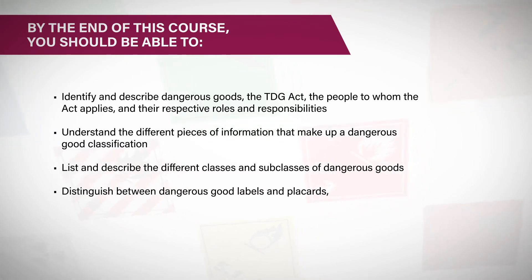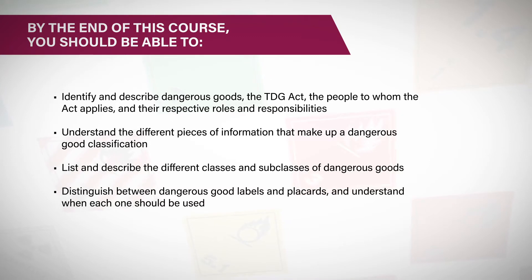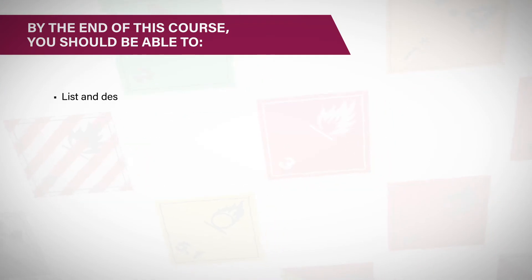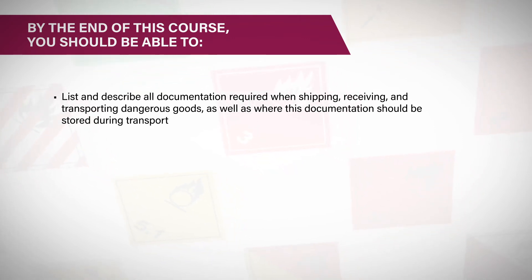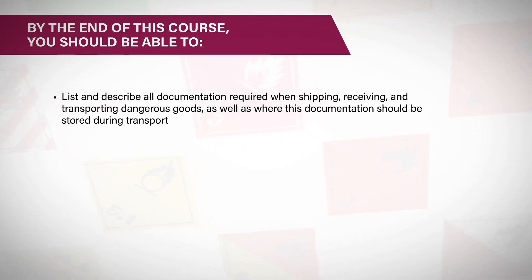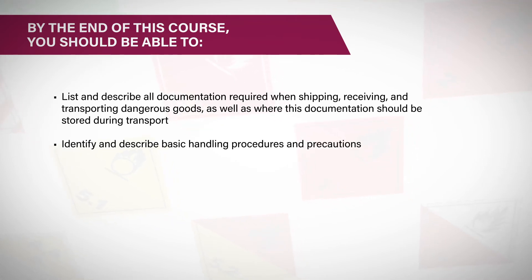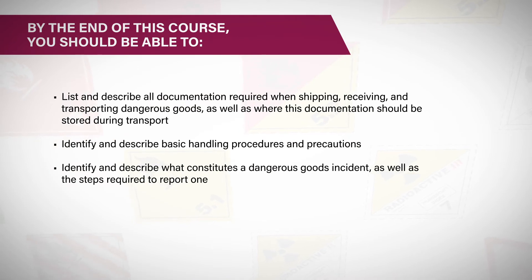You should be able to list and describe the different classes and subclasses of dangerous goods, distinguish between dangerous good labels and placards and understand when each one should be used, and list and describe all documentation required when shipping, receiving, and transporting dangerous goods, as well as where this documentation should be stored during transport. You will also identify and describe basic handling procedures and precautions.